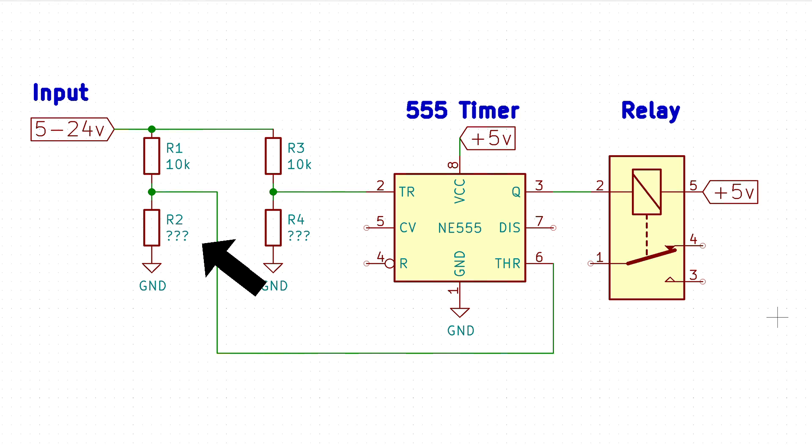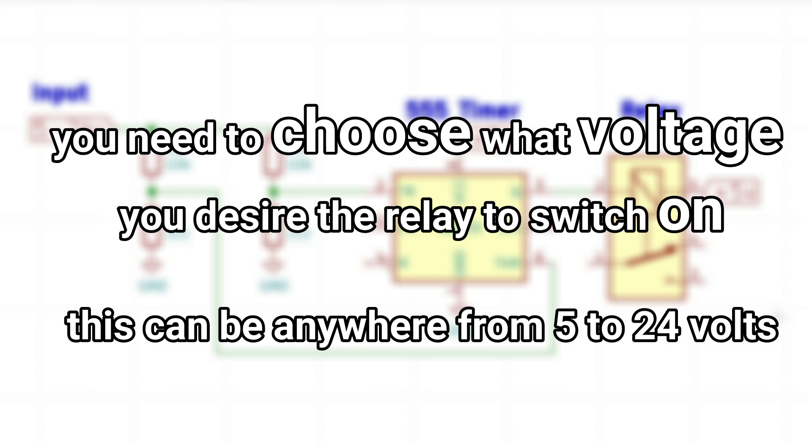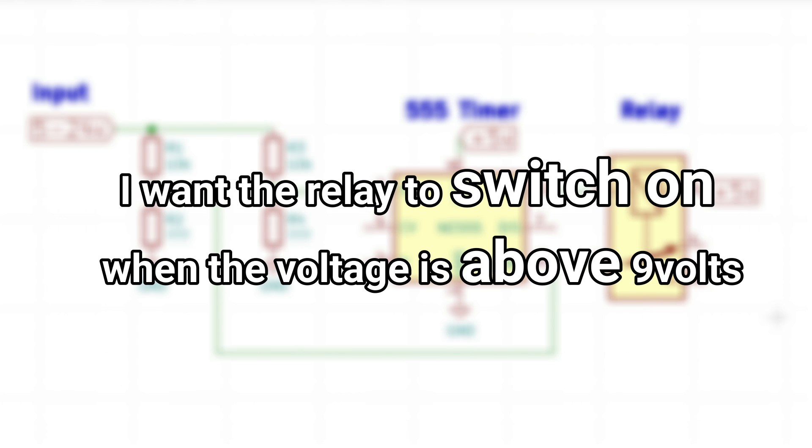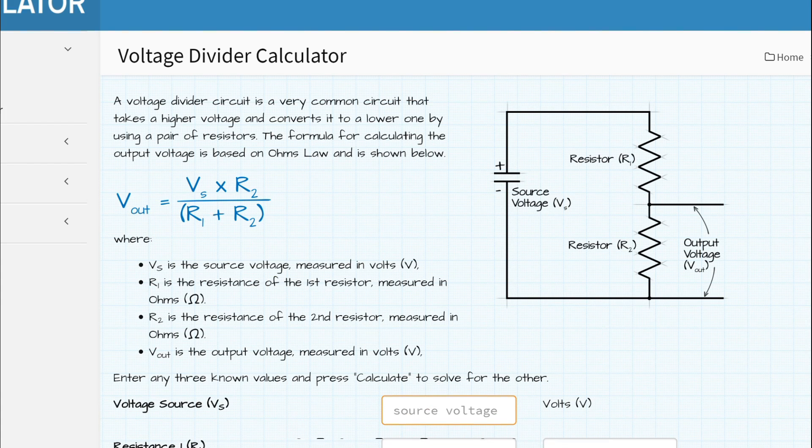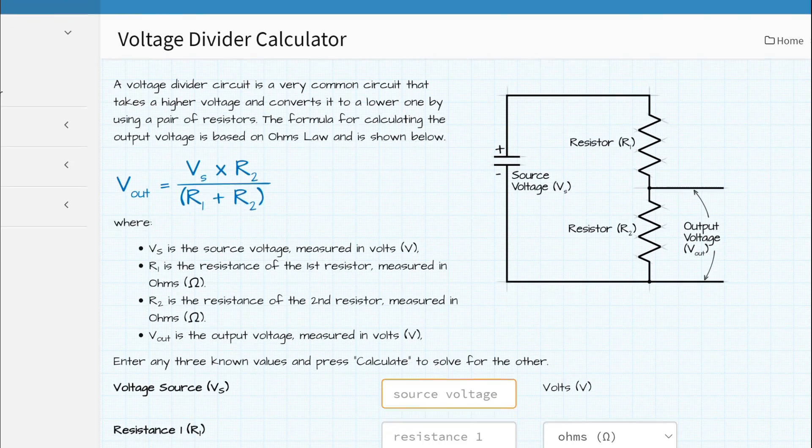In order to figure out the correct resistor value for R2, first you need to choose what voltage you desire the relay to switch on at. This can be anywhere from 5 to 24 volts. For my application I want the relay to switch on when the voltage is above 9 volts. I'll leave a link to this handy voltage divider calculator which makes it super simple to calculate the resistance value of R2.